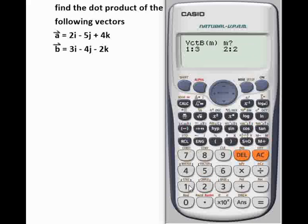And you select 1 also because you have i, j, and k. Then your first value is 3, equal to. Your second value is minus 4, equal to. And lastly you have minus 2, equal to.